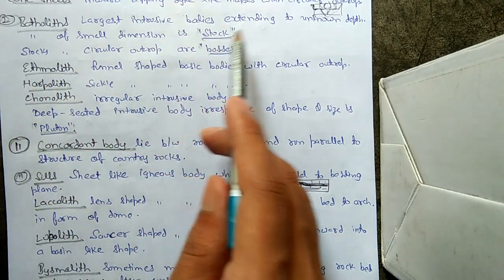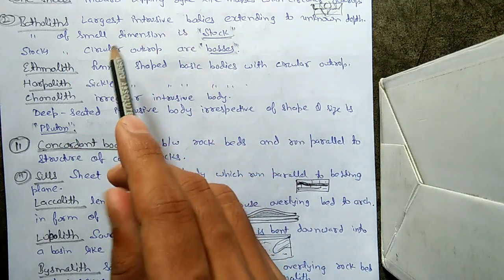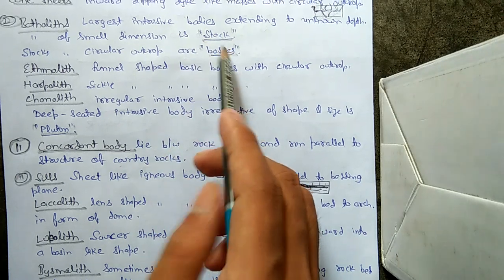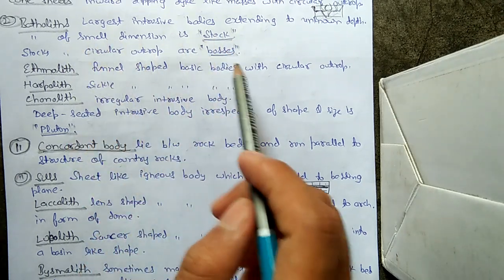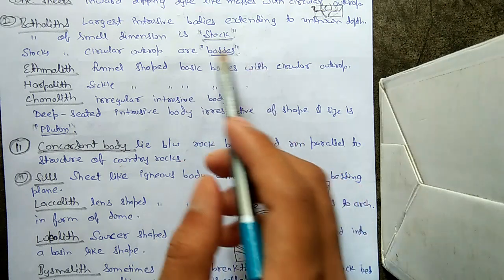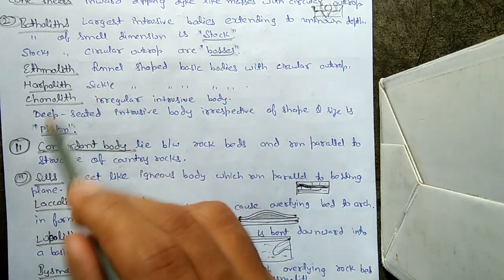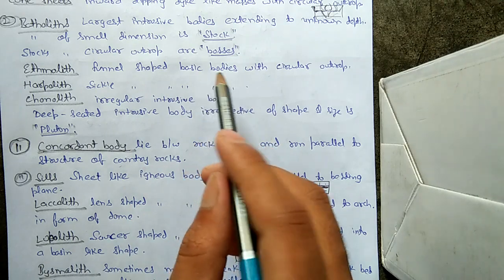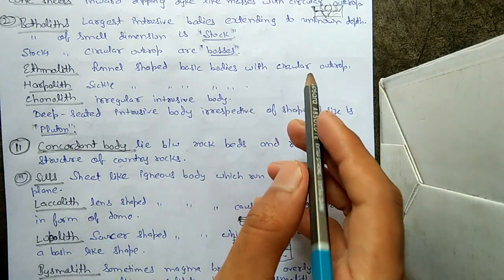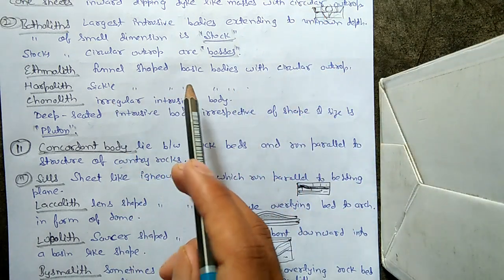The second categorization includes batholiths. Batholiths are the largest intrusive bodies, extending to unknown depth. Batholiths of smaller dimension are called stocks, and stocks with a circular outcrop are called bosses. Ethmolith are funnel-shaped basic bodies with a circular outcrop — they have a funnel-like structure.